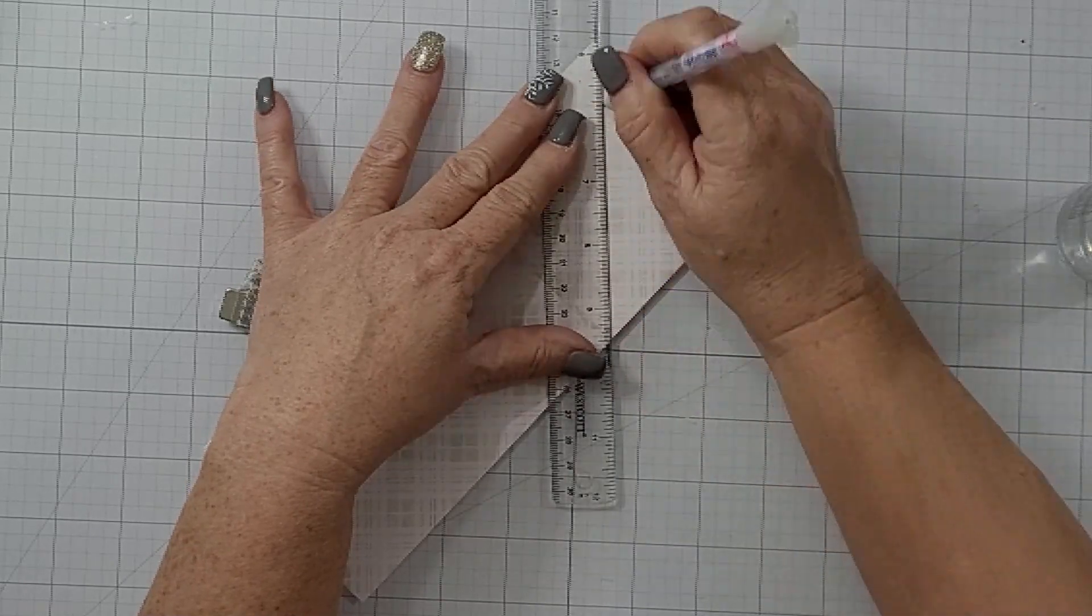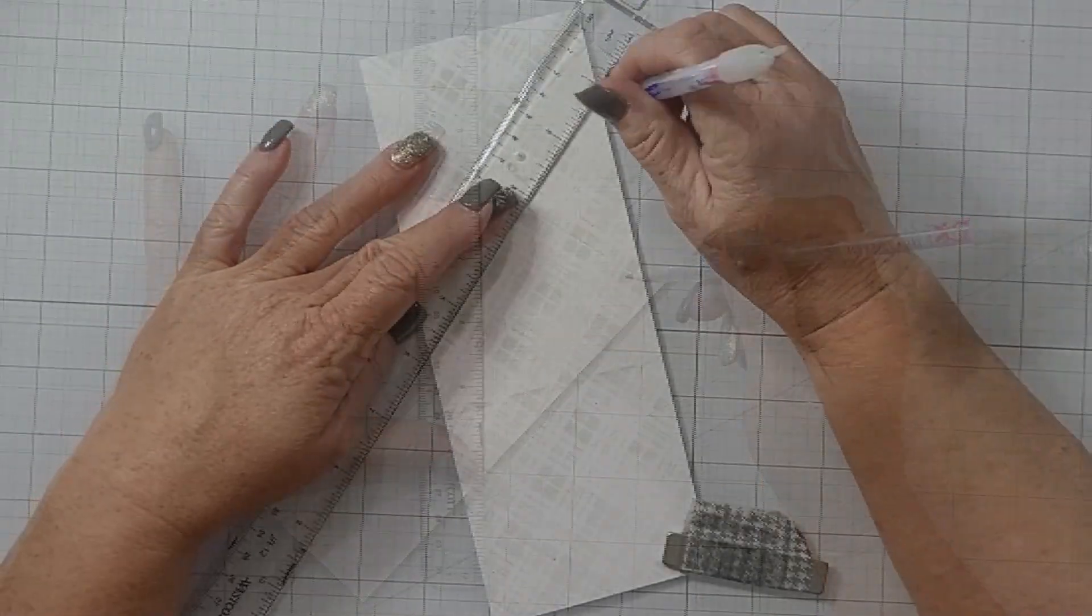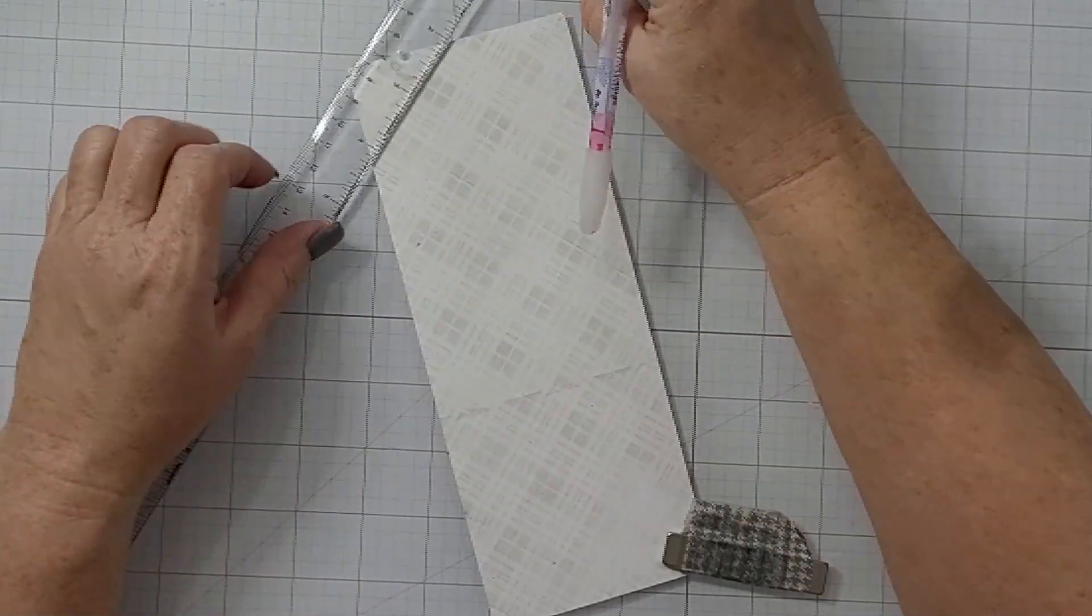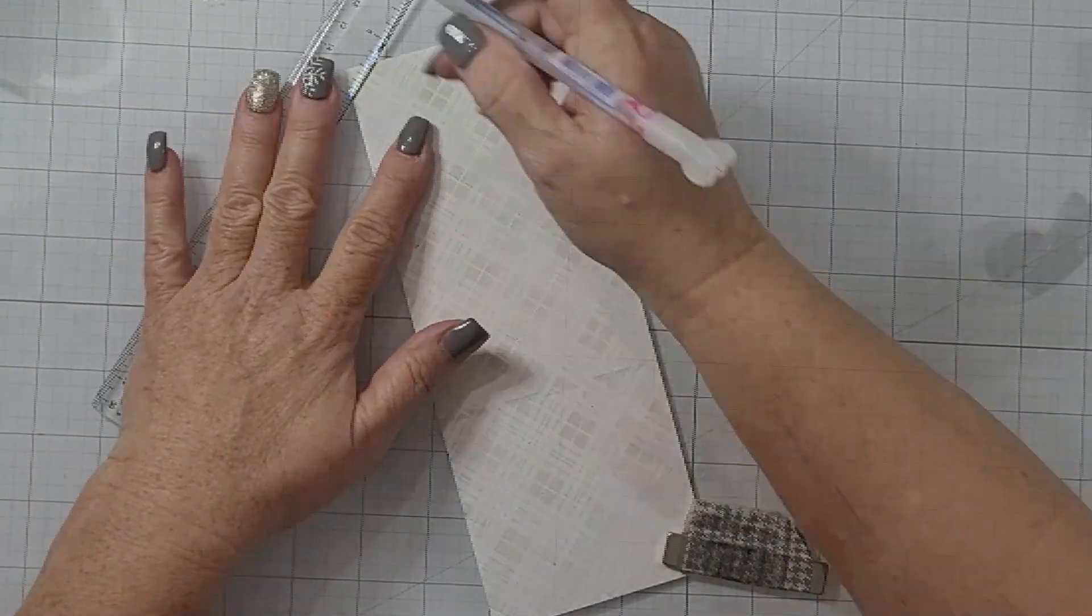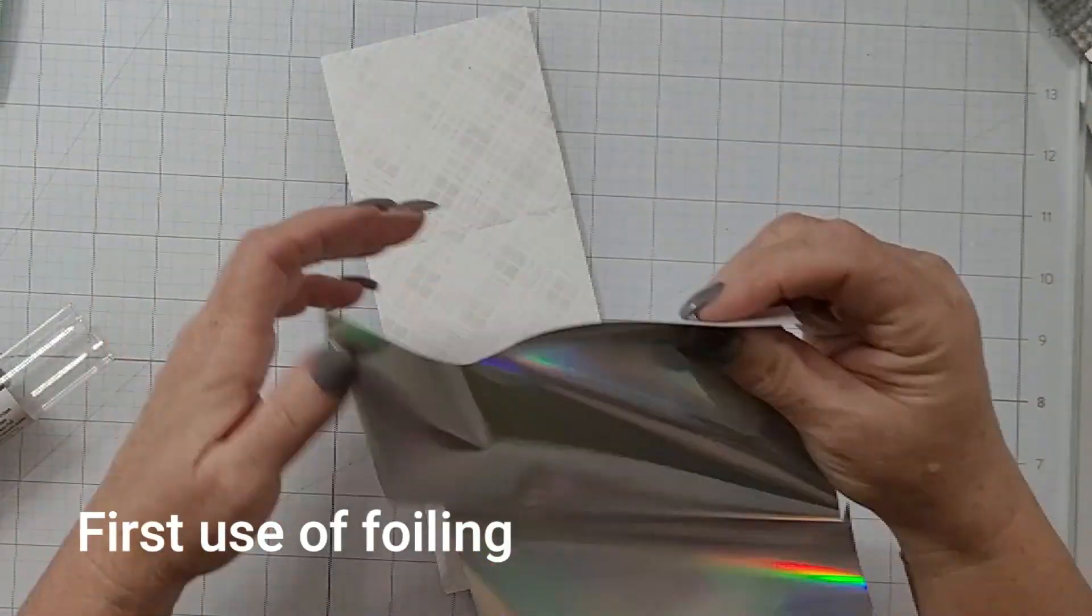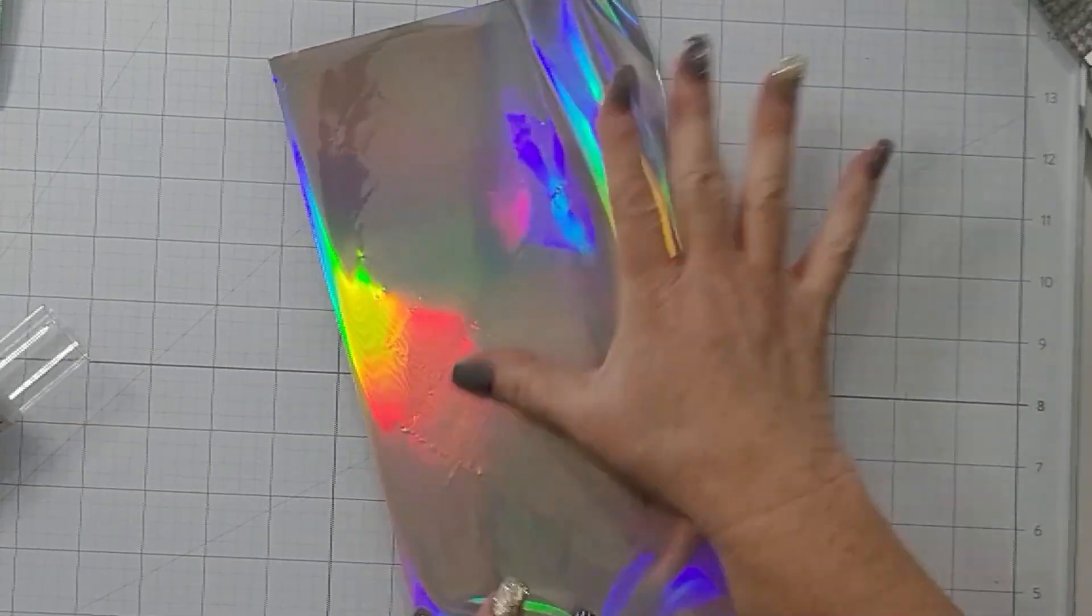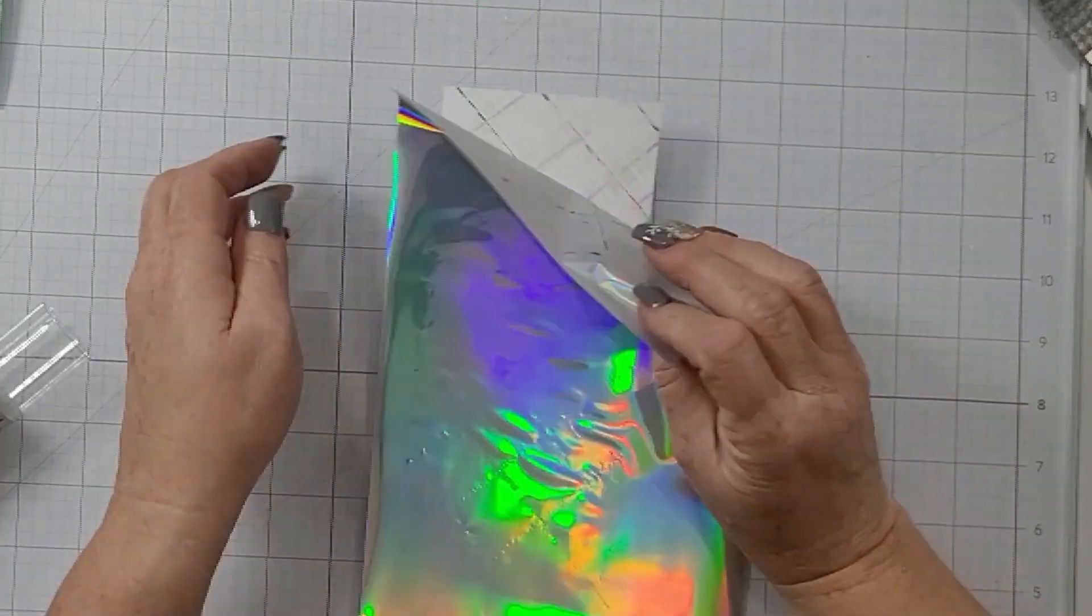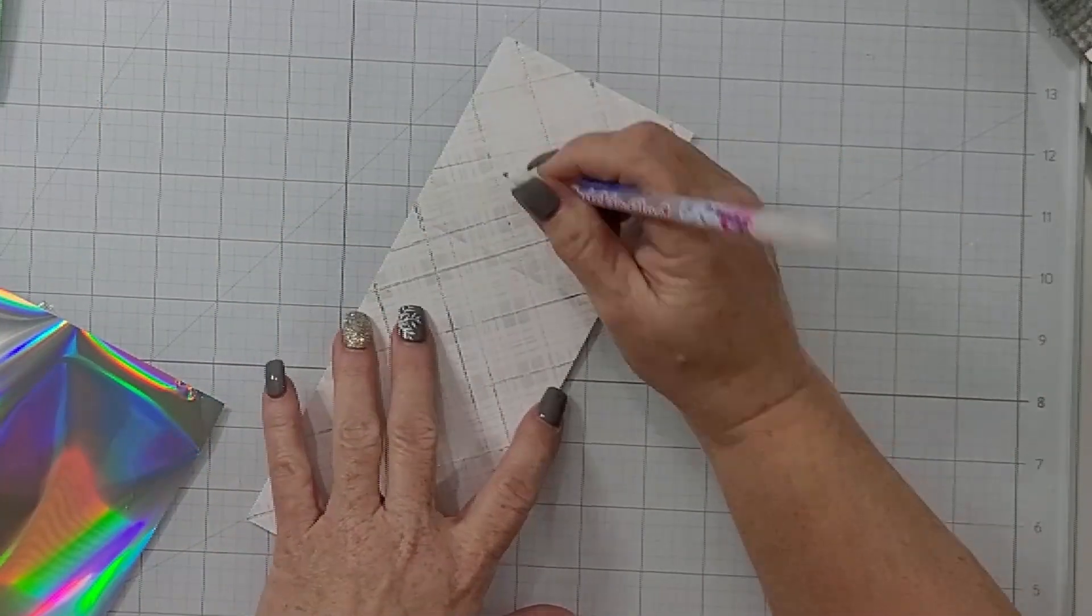That was very soft gray ink from Pink Fresh Studio. Now I have my Quickie glue pen and I'm using my T-ruler to make some lines within the plaid. I go in both directions, back and forth. I'm going to let this glue dry, set it aside for a little bit, then come back in with my foil. I don't know if y'all knew that you don't need either a laminator or your die cutting machine to foil.